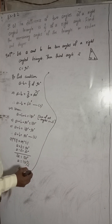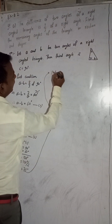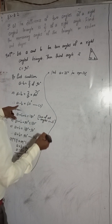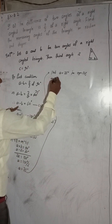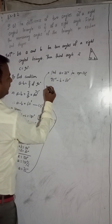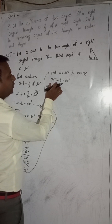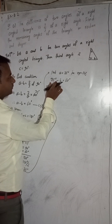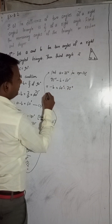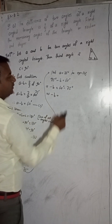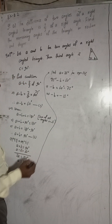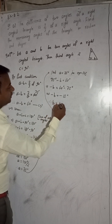Now A is equal to 75 degrees. Put A equals 75 degrees in equation one: 75 minus B equals 60 degrees. So minus B equals 60 minus 75, which is minus 15 degrees. Therefore B is equal to 15 degrees.